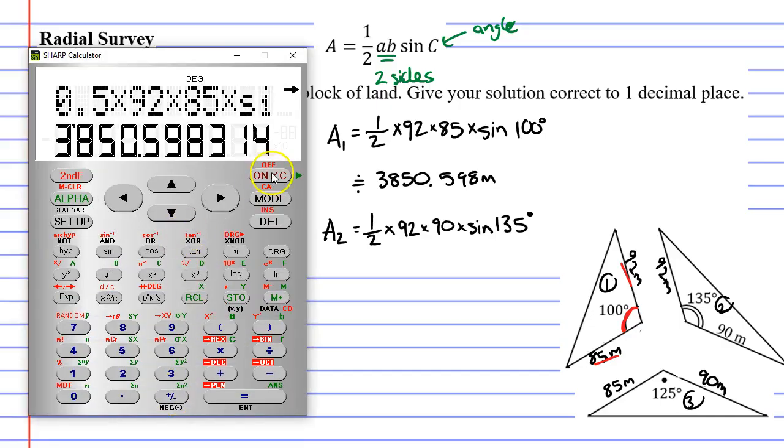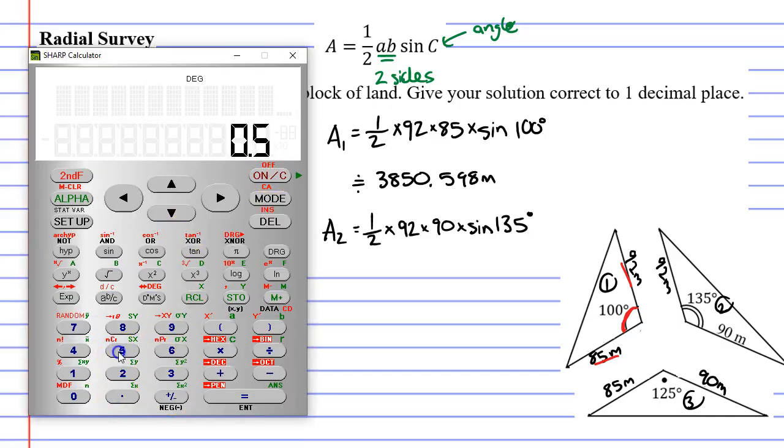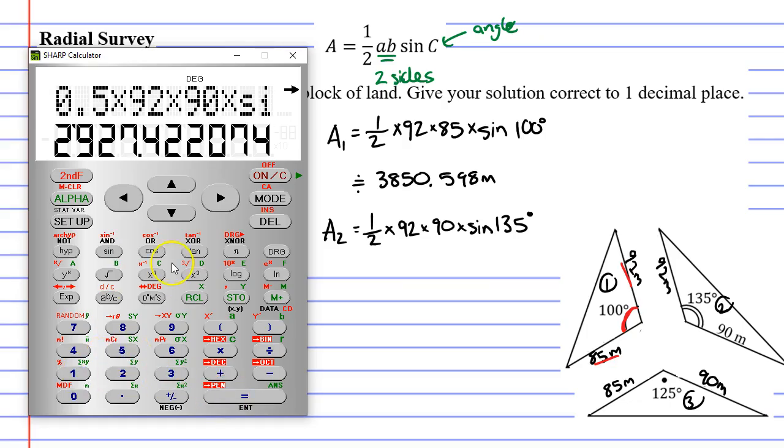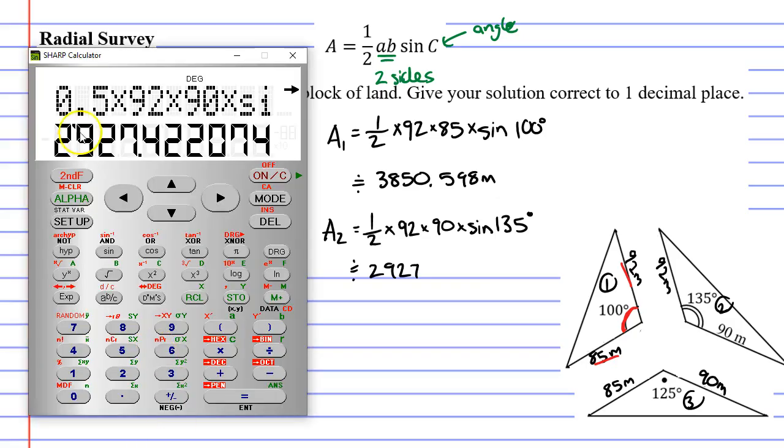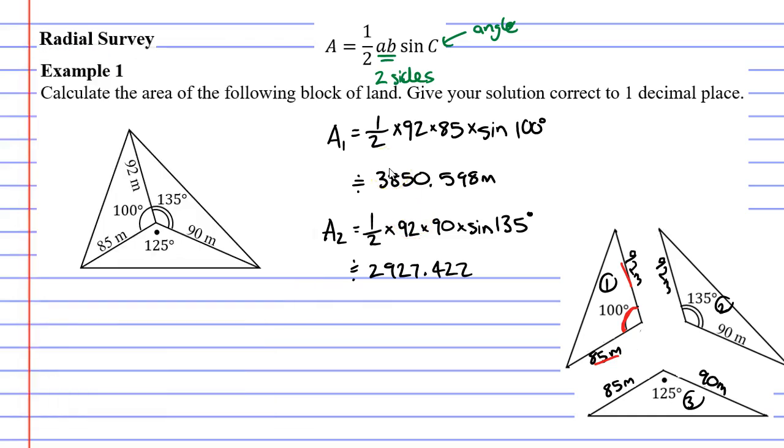Bringing up my calculator I get 0.5 instead of half times 92 times 90 times sine of 135 equals. And this time I get 2927.422 metres.